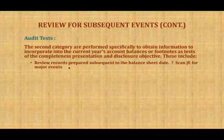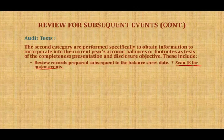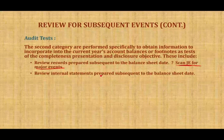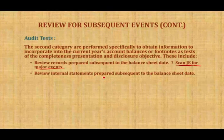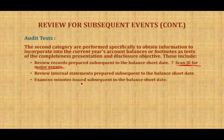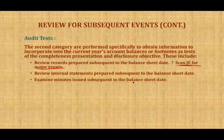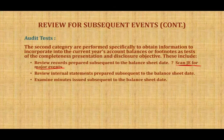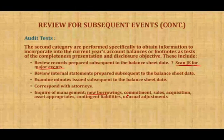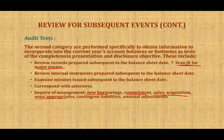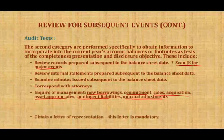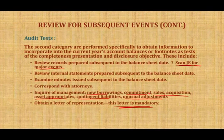How do we discover subsequent events? Review records prepared subsequent to the balance sheet — scan the client's journal entries for major or unusual events. Review internal statements prepared subsequent to the balance sheet date and compare them to prior periods to identify anything unusual. Examine minutes issued subsequent to the balance sheet from board of directors or stockholder meetings. Correspond with the attorney to see if anything happened since the balance sheet date. Inquire with management about new borrowing, new commitments, new sales, acquisitions, asset appropriation by government, contingent liabilities, and unusual adjustments. Obtain a letter of representation — this letter is mandatory and will be covered in a separate recording.